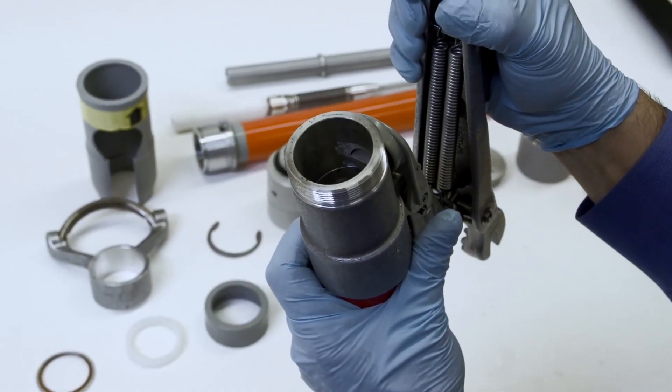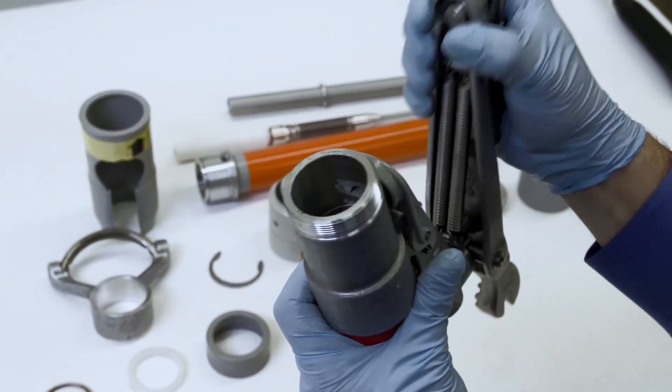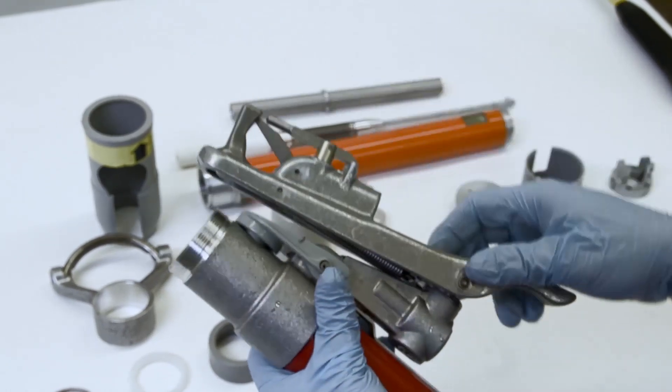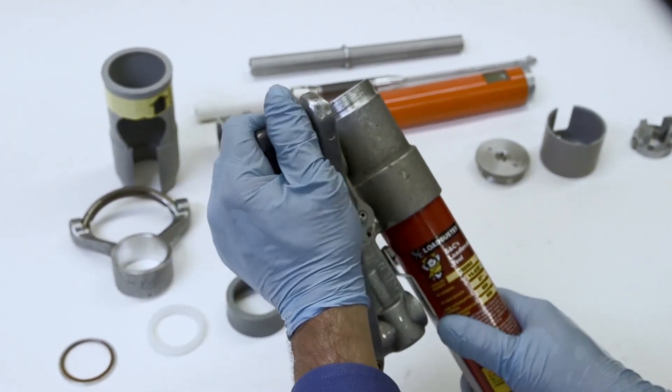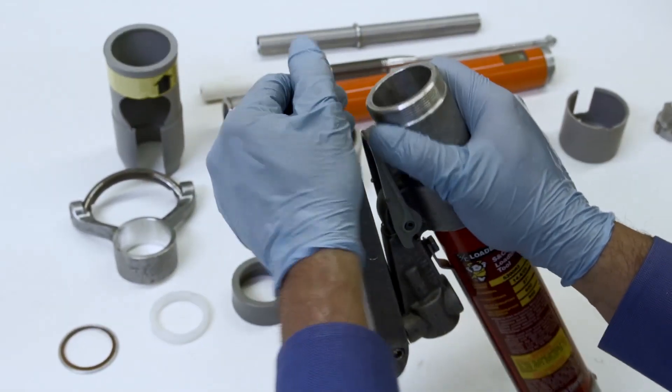Pull the hook frame assembly away from the chassis and inspect the springs. Replace them if damaged or severely corroded. The entire assembly should also rotate freely side to side.